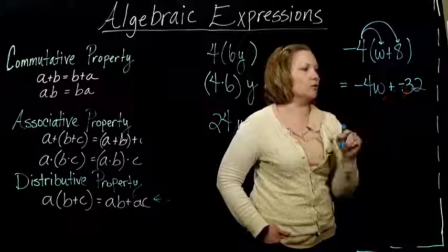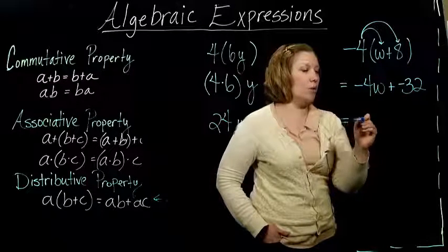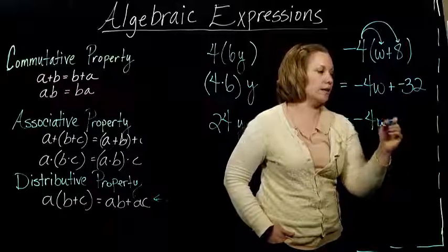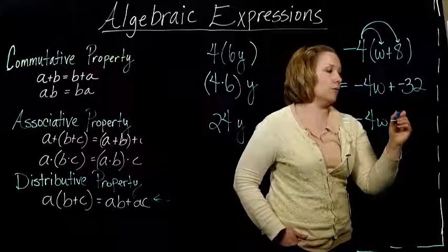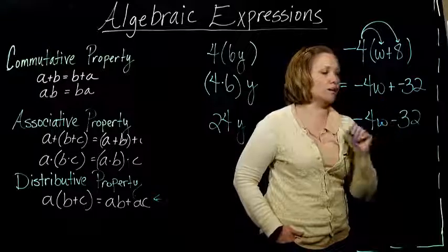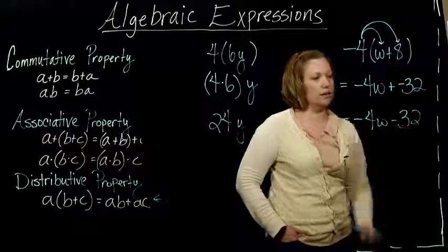I have negative 4w plus negative 32, or you could rewrite that as negative 4w minus 32. We're adding the opposite, that's the same thing as subtracting the opposite.